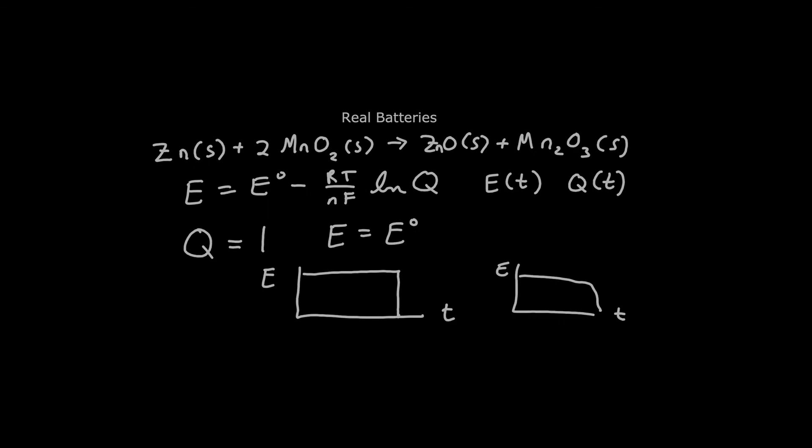So we can see that since all the products and reactants are solids, Q for this is going to be equal to one. So if we plug Q of one into the Nernst equation, we're taking a logarithm of one, we get a zero, which means the potential is always equal to the standard potential. So in theory, if we graph the voltage as a function of time, the potential of the cell should be constant until one or more of the reactants are used up, and then it should just drop to zero.